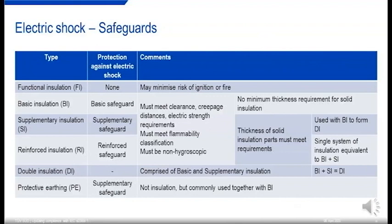Here are some commonly used safeguards for electric shock. Functional insulation isn't actually protecting against electric shock — it might just minimize the risk of ignition or fire. Basic, supplementary, and reinforced insulation correspond with the safeguard types of the same name. They need to meet the dimensions laid out in the standard, as shown in the chart. Double insulation — a legacy term from 60950 and 60065 — is equivalent to basic plus supplementary insulation. Protective earthing is a supplementary safeguard often used in conjunction with basic insulation.